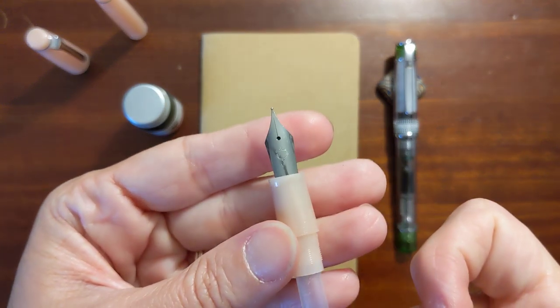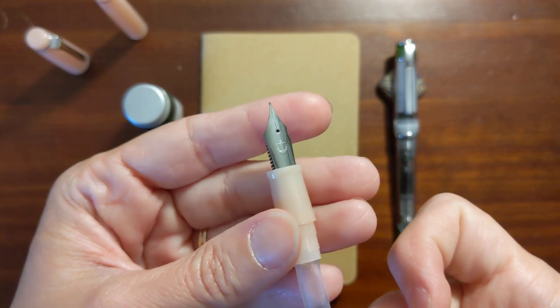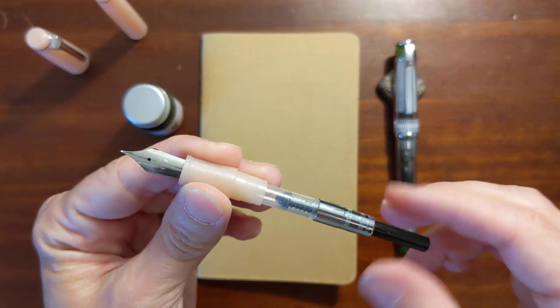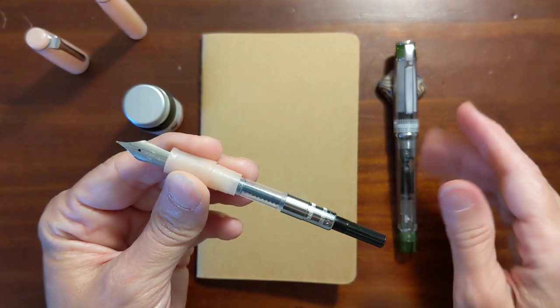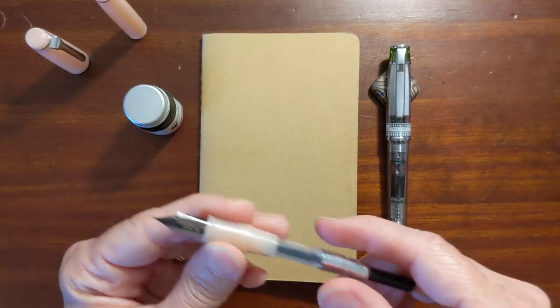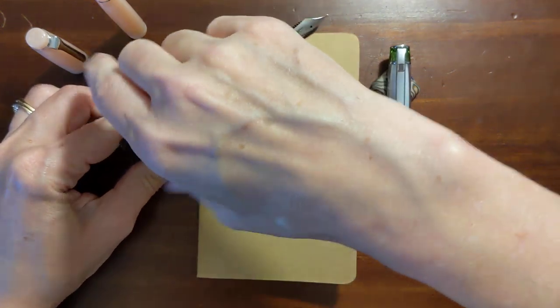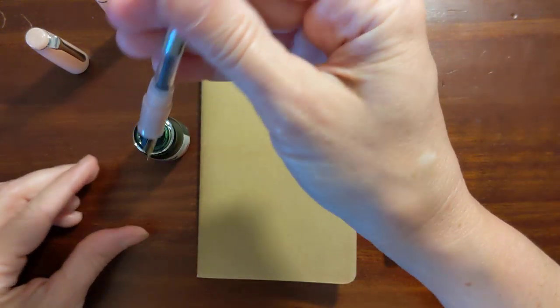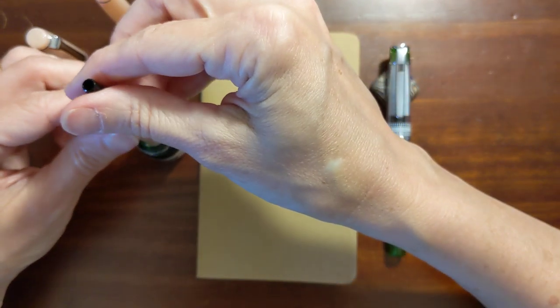And both of these pens, the Prera and the Sailor Lacool, have a plain nib. I have to say I like the look of the Prera nib better even though they're both plain. I just think the Prera and the 78G uses the same nib as the Prera. I just think they're better looking. But we'll see how these write.